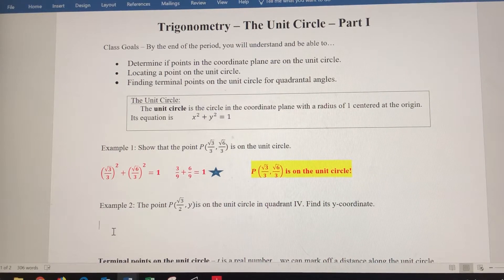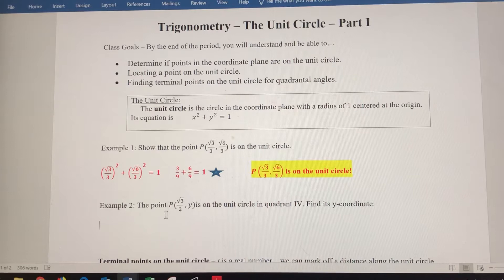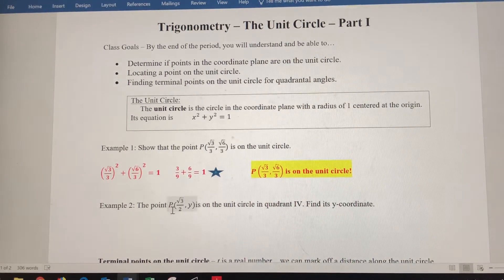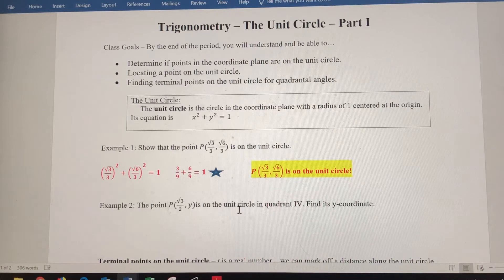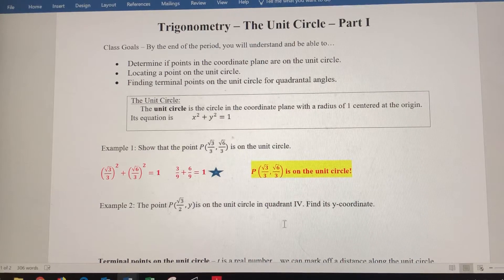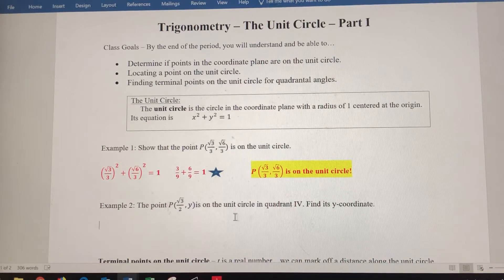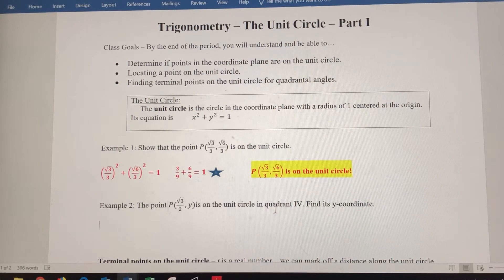All right, in this video we're going to do example 2 here. We're going to find a coordinate value. Given a point P that we know to be on the unit circle, and we're going to be provided with a quadrant that this point lies in.